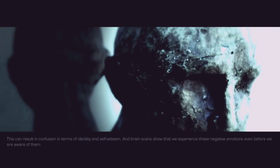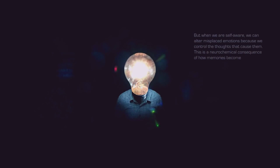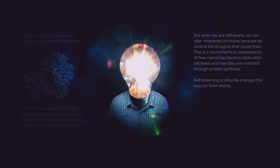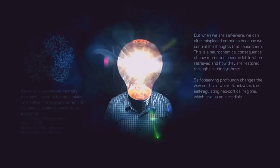But when we are self-aware, we can alter misplaced emotions because we control the thoughts that cause them. Self-observing profoundly changes the way our brain works. It activates the self-regulating neocortical regions which give us an incredible amount of control over our feelings. Every time we do this, our rationality and emotional resilience are strengthened.